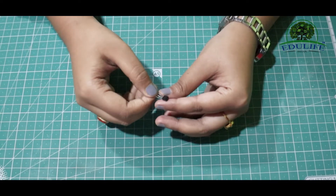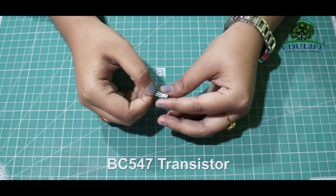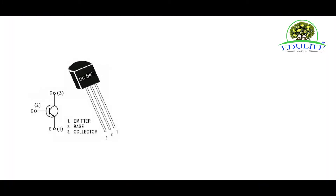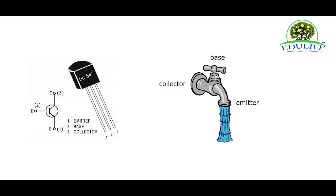The other component is the BC547 transistor. It has collector, base, and emitter terminals. It functions as an amplifier of current and as a switch. The connections are: first the collector is created, then the base, then the emitter.